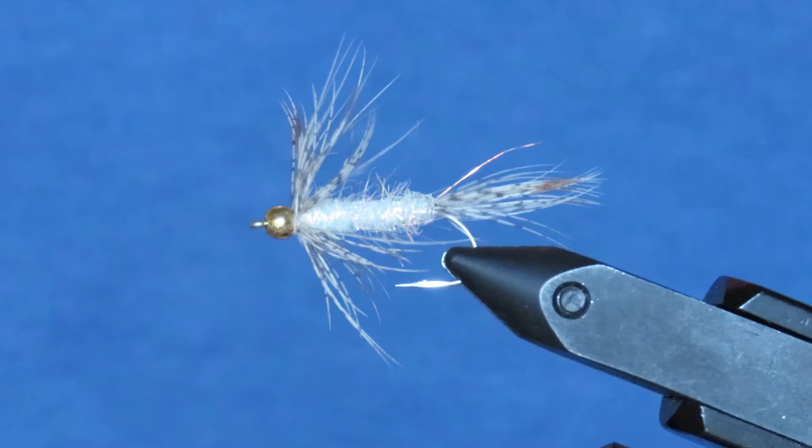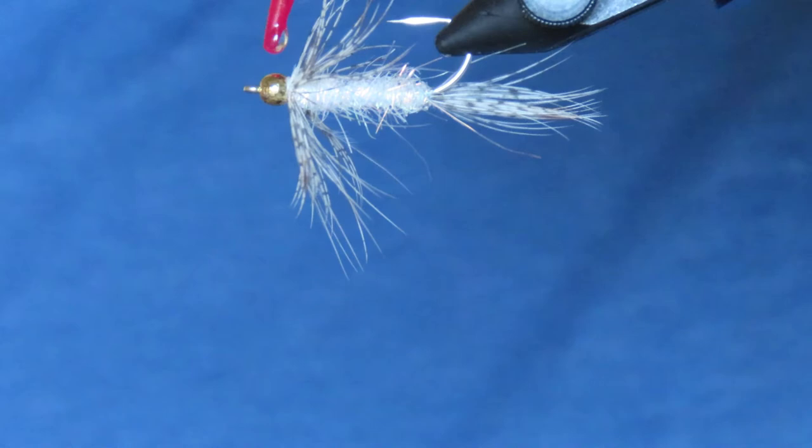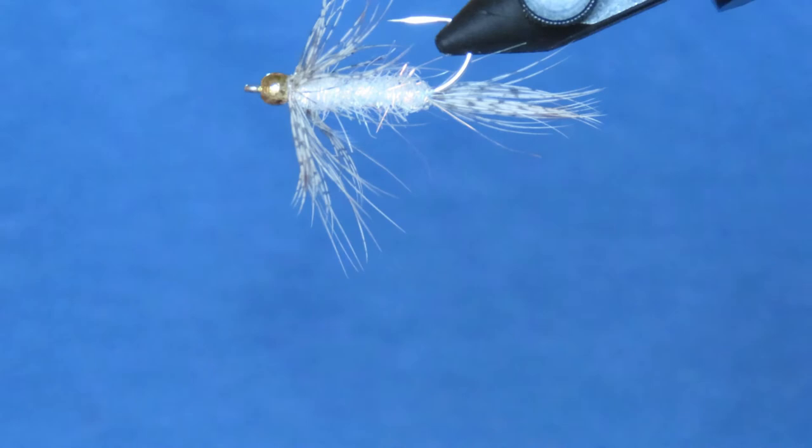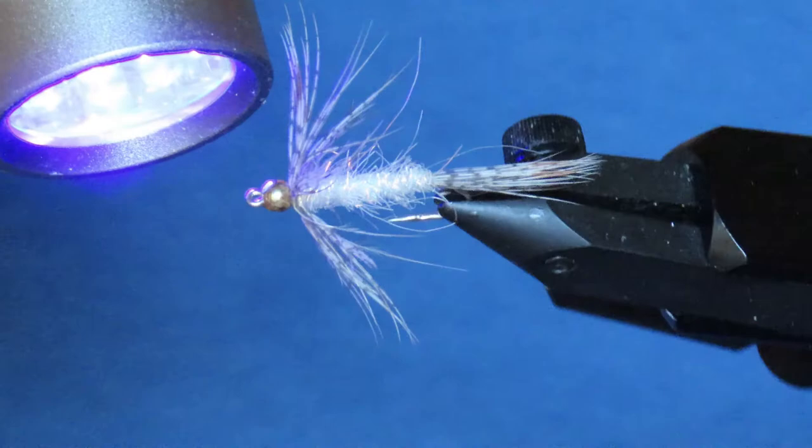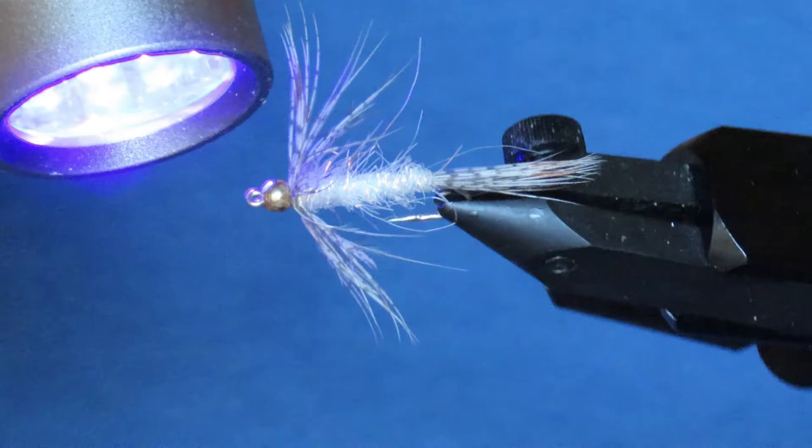Now to finish off, you can add a tiny drop of varnish, or in this case I'm going to use UV resin over that knot to protect it. And this will also just help to keep that bead nicely anchored at the front of the hook. Give that a quick zap with the UV. And there we have it.